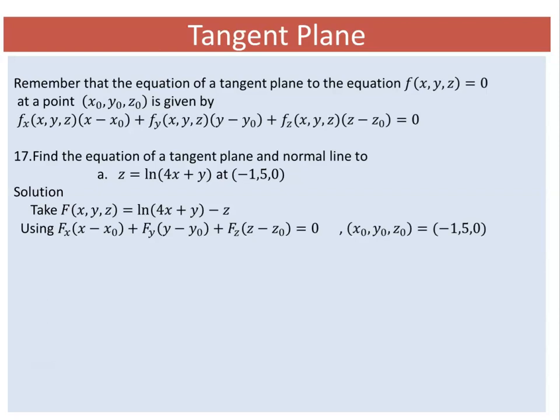The partial derivative of f with respect to x: using the chain rule, the derivative is 1 over (4x + y), and the derivative of 4x is 4, so it's 4/(4x + y). The partial derivative of f with respect to y is 1/(4x + y), and the partial derivative of f with respect to z is -1.